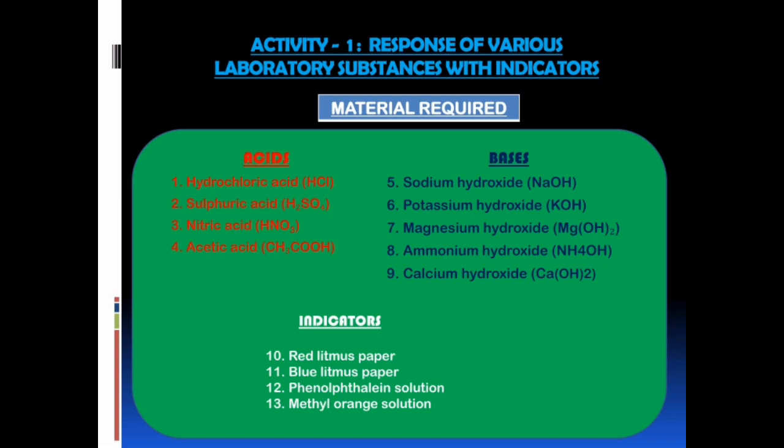Now it is activity time. Activity 1: Response of various laboratory substances with indicators. Material required for this activity: we require 4 acids, 5 bases, and 4 indicators. Acids: hydrochloric acid, sulfuric acid, nitric acid, and acetic acid. Bases: sodium hydroxide, potassium hydroxide, magnesium hydroxide, ammonium hydroxide, and calcium hydroxide. Indicators: red litmus paper, blue litmus paper, phenolphthalein solution, and methyl orange solution. You can observe the respective chemical formulae on the screen.